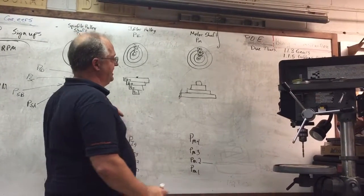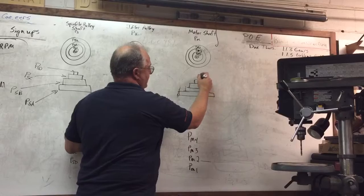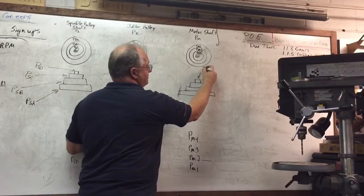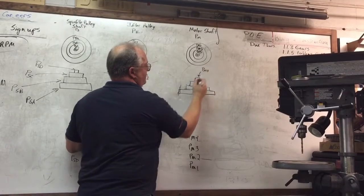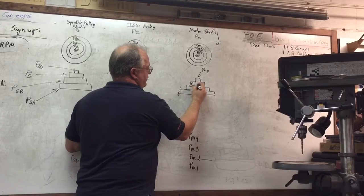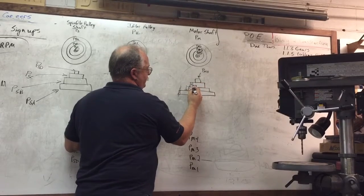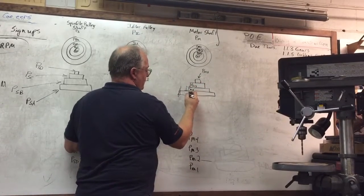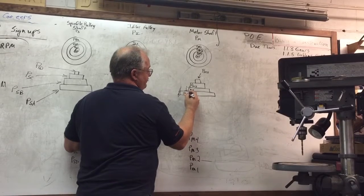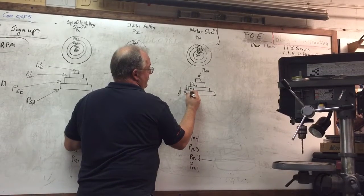Moving over, we need to also label our motor shaft. So this one here, the very smallest one is PM4, this is PM3, this is PM2, and our biggest one right here is PM1.